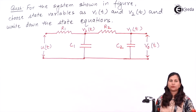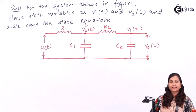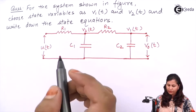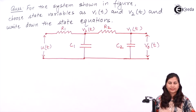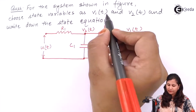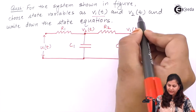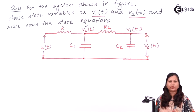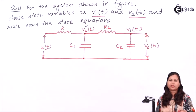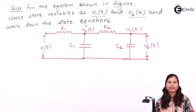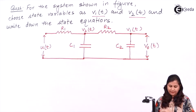Our problem is to find the state space representation or the state equations of this system. We have to choose the state variables as v1(t) and v2(t). Using these two state variables we have to find out the state equations and the state model of the system.